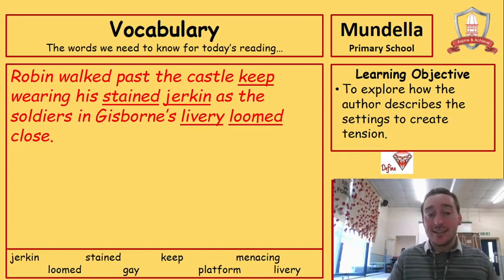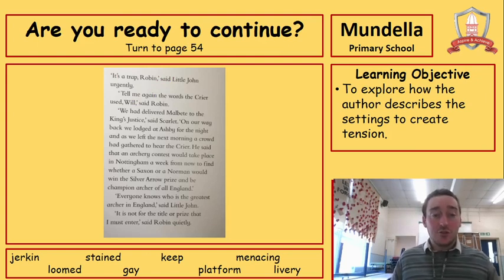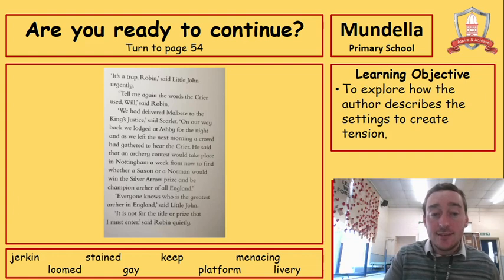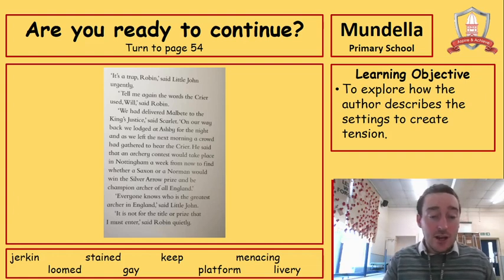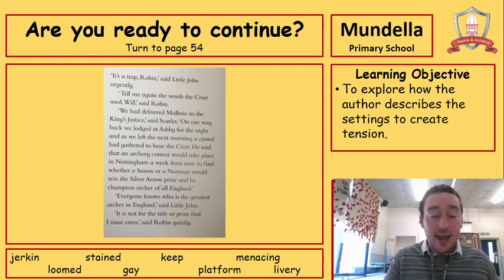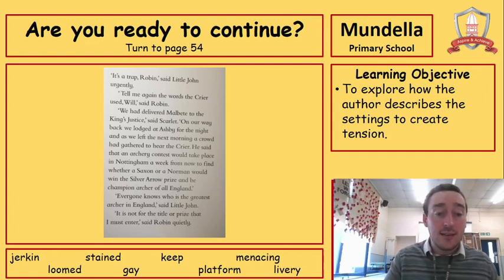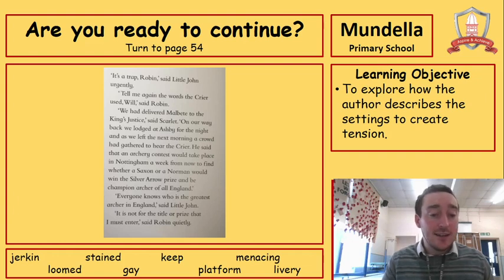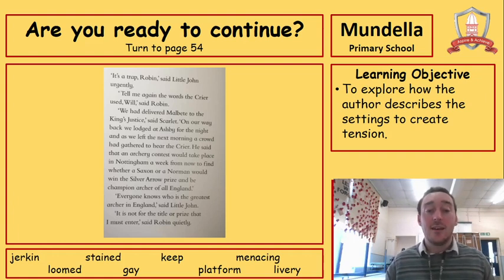Let's have a look at our reading today. It's a trap, Robin, said Little John urgently. Tell me again the words the crier used, Will, said Robin. We had delivered Malbeet to the king's justice, said Scarlet. On our way back, we lodged at Ashby for the night. As we left the next morning, a crowd had gathered to hear the crier. He said that an archery contest would take place in Nottingham a week from now to find whether a Saxon or a Norman would win the silver arrow prize and be champion archer of all England. Everyone knows who is the greatest archer in England, said Little John. It's not for the title or prize that I must enter, said Robin quietly.